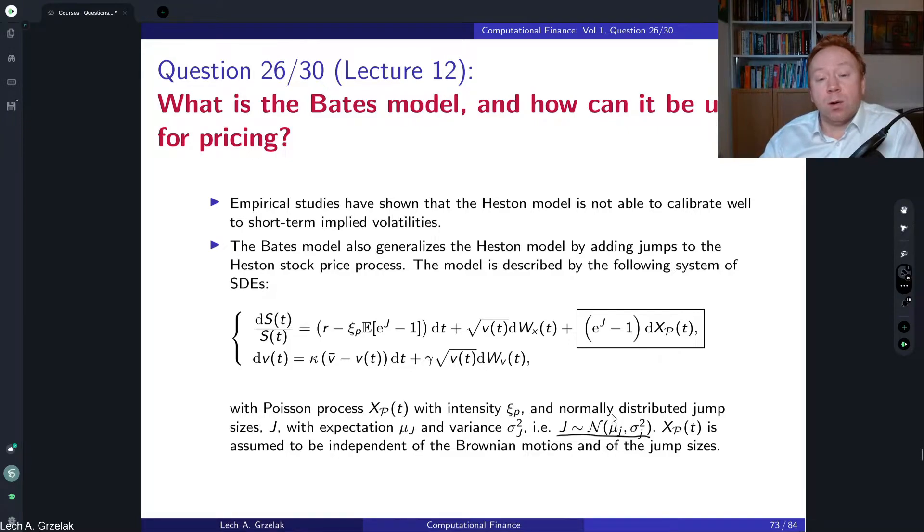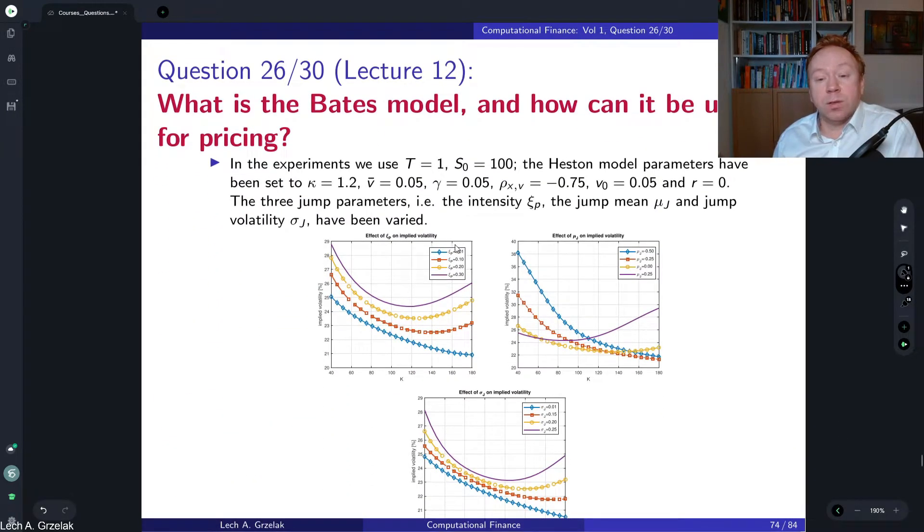So let us take a look now at the impact on the implied volatilities in this particular model. We have three additional parameters of the Bates model: we have Xi_P, which is the intensity used for the Poisson process; we have Mu_J, which is the mean for the normally distributed jump; and then we have the standard deviation Sigma_J. We also here consider different values.